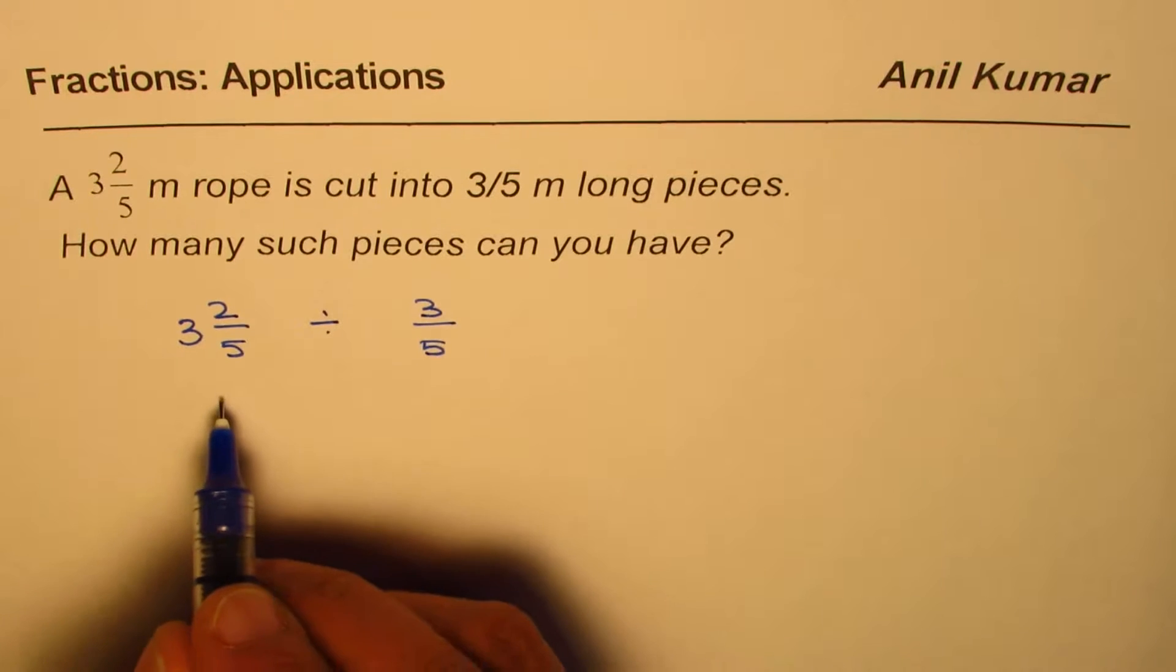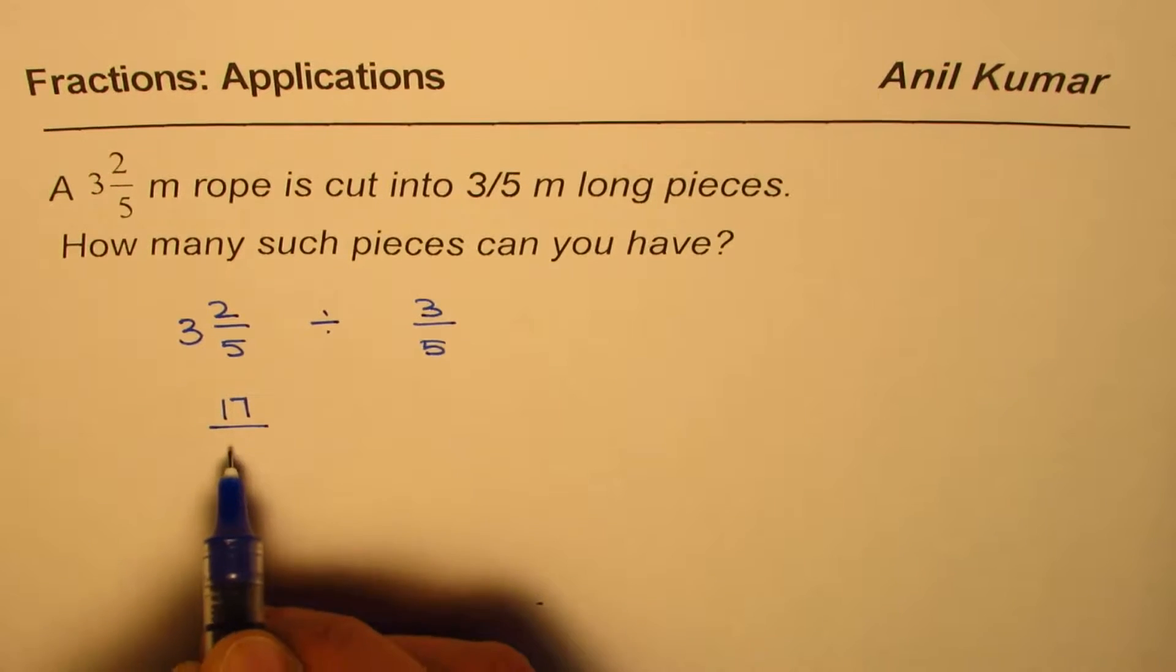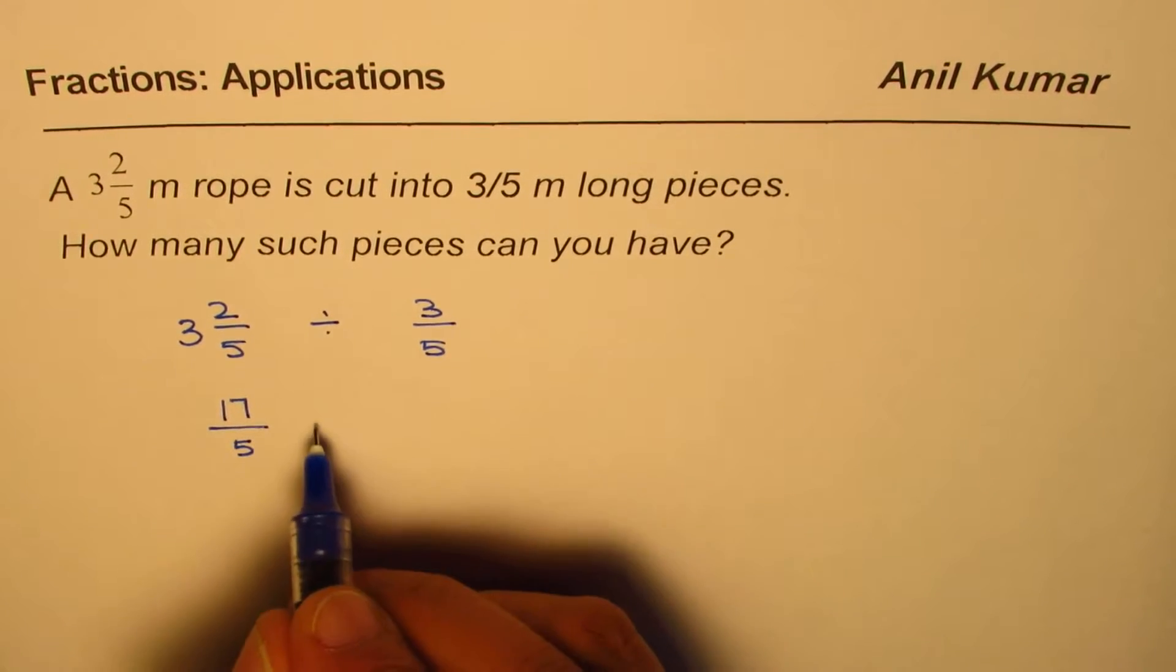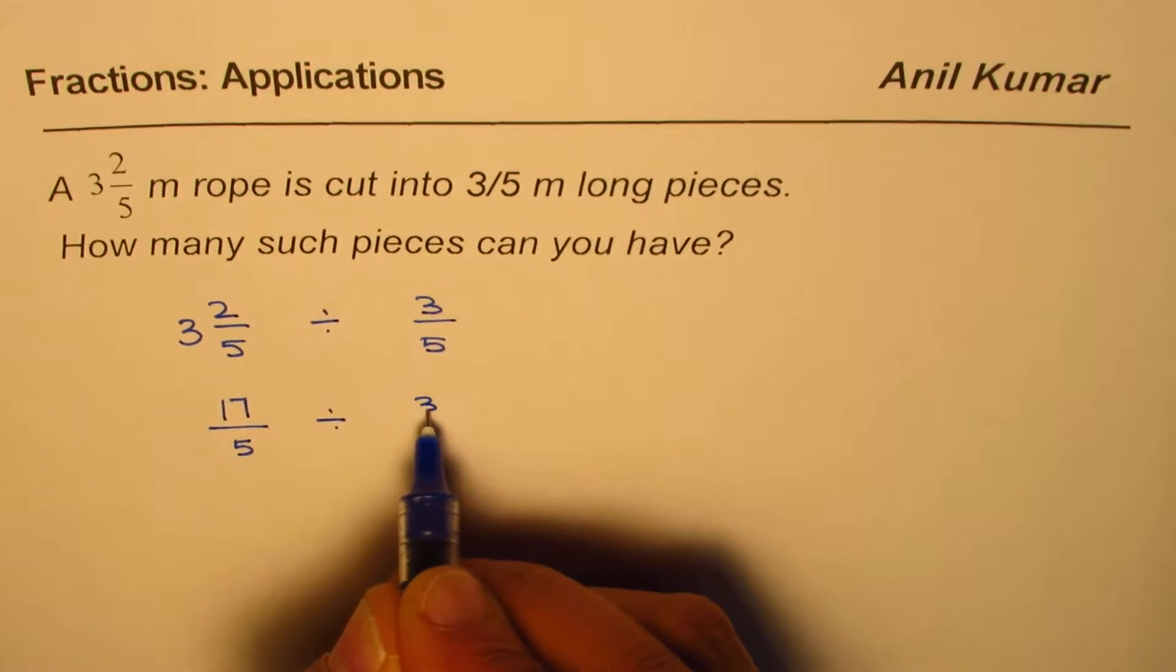3 times 5 is 15 plus 2 is 17. So we can write this as 17/5 divided by 3/5.